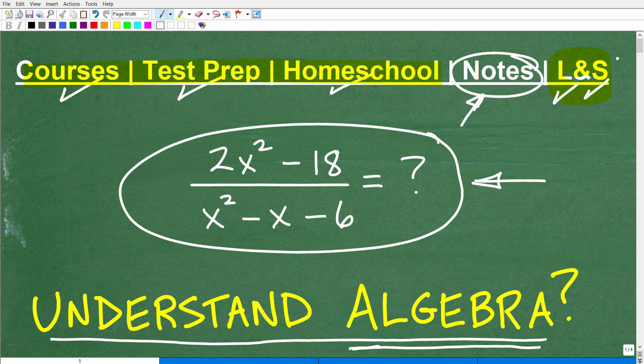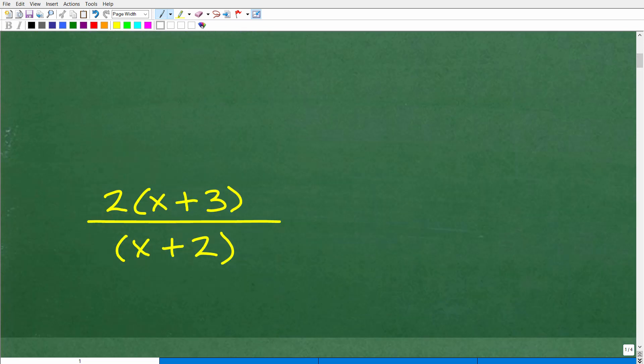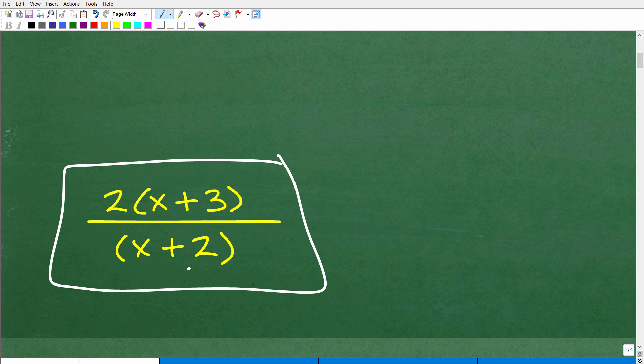Okay, so let's go ahead and take a look at the answer here. We have 2x² - 18 over x² - x - 6. What do we need to do? Well, this is going to involve factoring. And when we simplify this rational expression, here is the answer. Okay, you should have this right here, 2 times (x + 3) over (x + 2). Now,